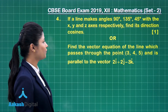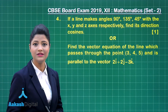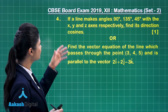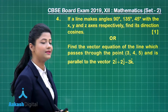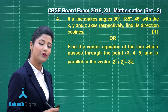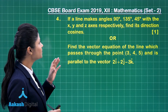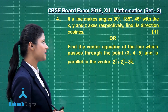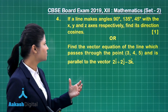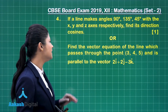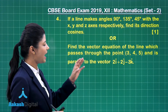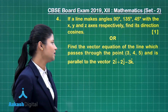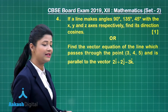Let us discuss question number 4. This question has two choices. You can go with any one of the questions to get one mark. The first choice is: if a line makes angles 90 degrees, 135 degrees and 45 degrees with the x, y and z axis respectively, find the direction cosines. In the second choice, find the vector equation of the line which passes through the point (3, 4, 5) and is parallel to the vector 2i-cap plus 2j-cap minus 3k-cap.